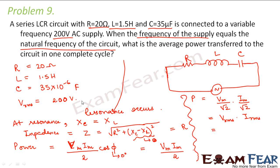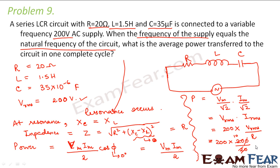This becomes Vrms times Irms. Vrms is given as 200 volts, and Irms equals Vrms divided by R, which is 200 divided by 20. So the average power comes out to be 2000 watts — this is the average power transferred to the circuit in one complete cycle.